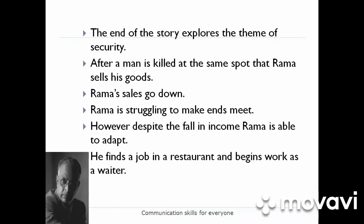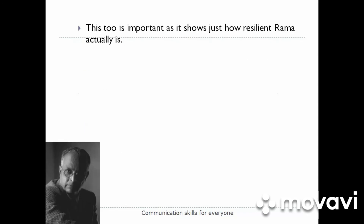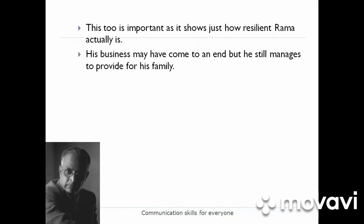It may also be the case that Narayan is exploring the theme of corruption. Rama gives some of his goods to the passing policeman and the occasional worker from the Department of Health in order that they do not harass him — telling him to move on or to ensure his goods are displayed in a certain way. This places a spotlight on the workings of street life in India and the power that those in authority have, which they may abuse for their own gain. Rama has to pay those in authority because if he doesn't, he is unable to make any sort of living.